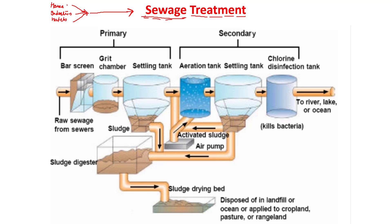Sewage cannot be released into water bodies directly, so this water needs to be treated — that's why STP treatment plants are required. The treatment occurs in two processes: the first stage is primary or physical treatment, and the second stage is secondary or biological treatment.